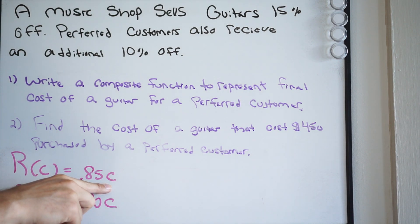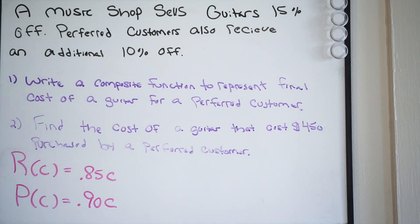But then since you are a preferred customer, you would then take that cost and plug it in here as well. And that would give you the final total of your cost. However, we want to create a composite function so we don't have to do multiple steps here. We want to do it all in one go.